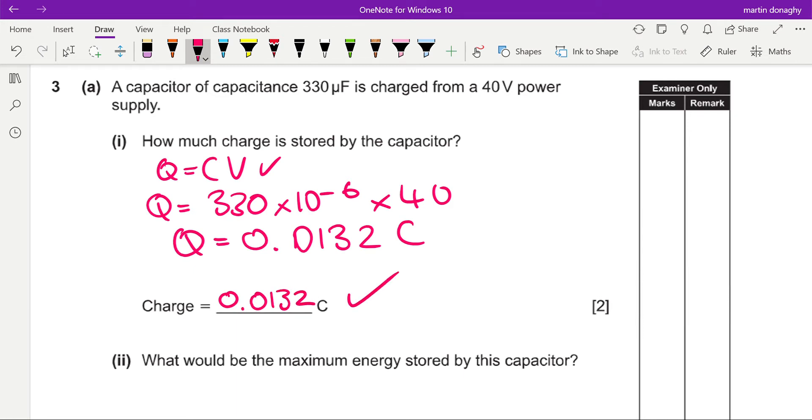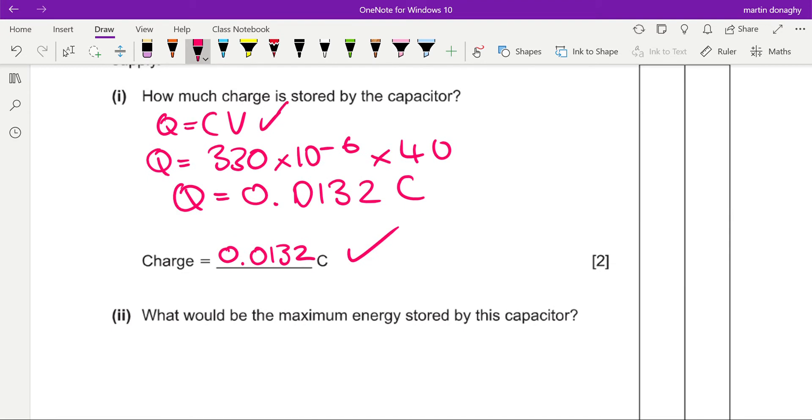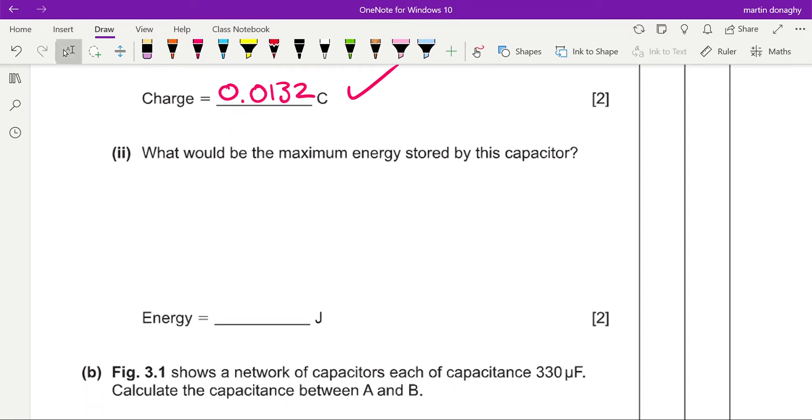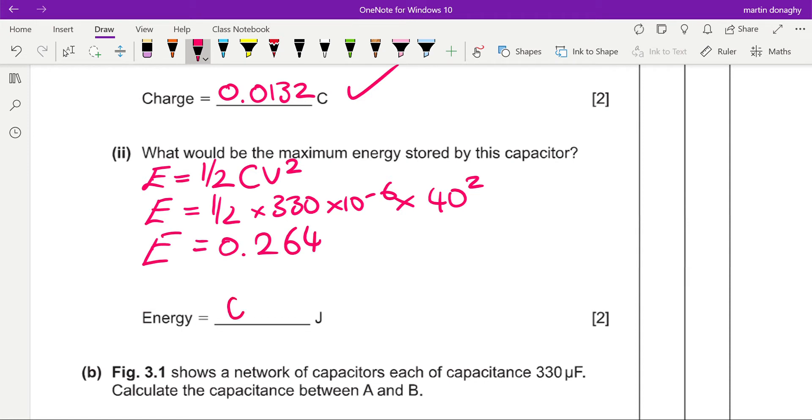There's a mark for your answer. What would be the maximum energy stored by this capacitor? I would probably use the half CV squared, but we've got the charge up there you could use any other equation that works because we know all three things about the capacitor now. So a half, the capacitance was 330 by 10 to the minus 6, multiplied by the voltage which is 40. Don't forget the square, really easy to do there, people do that with this one and a half mv squared for some reason. And then the energy is 0.264 joules.